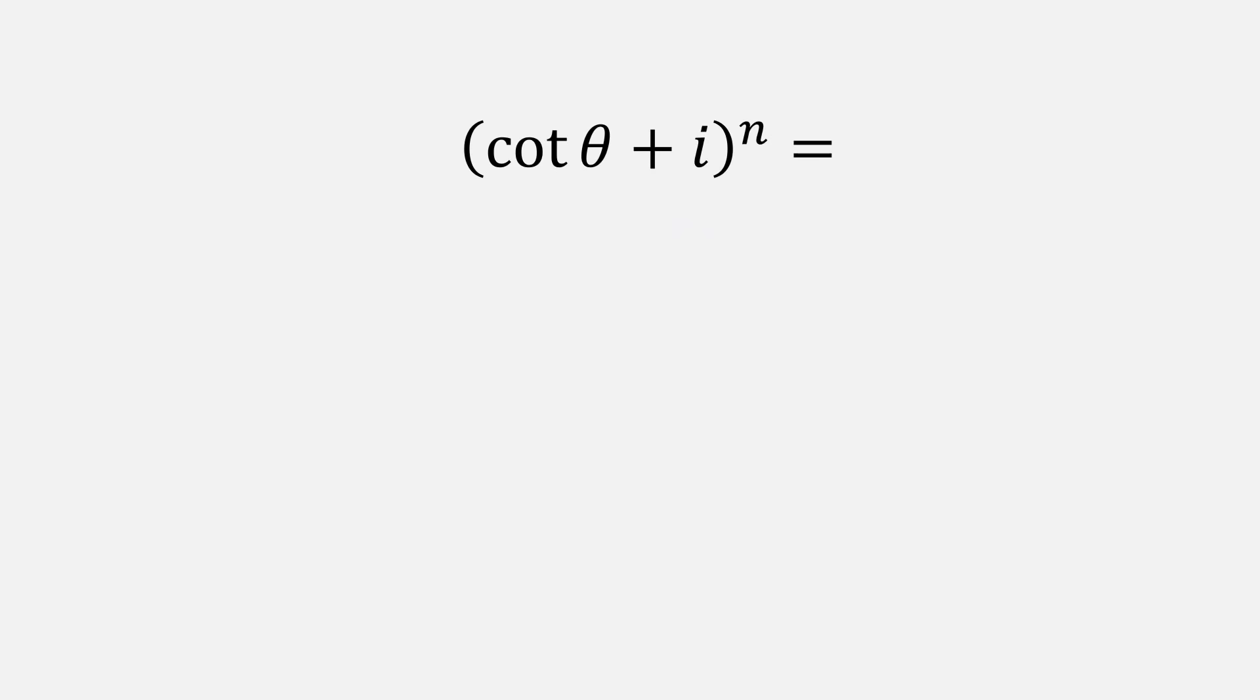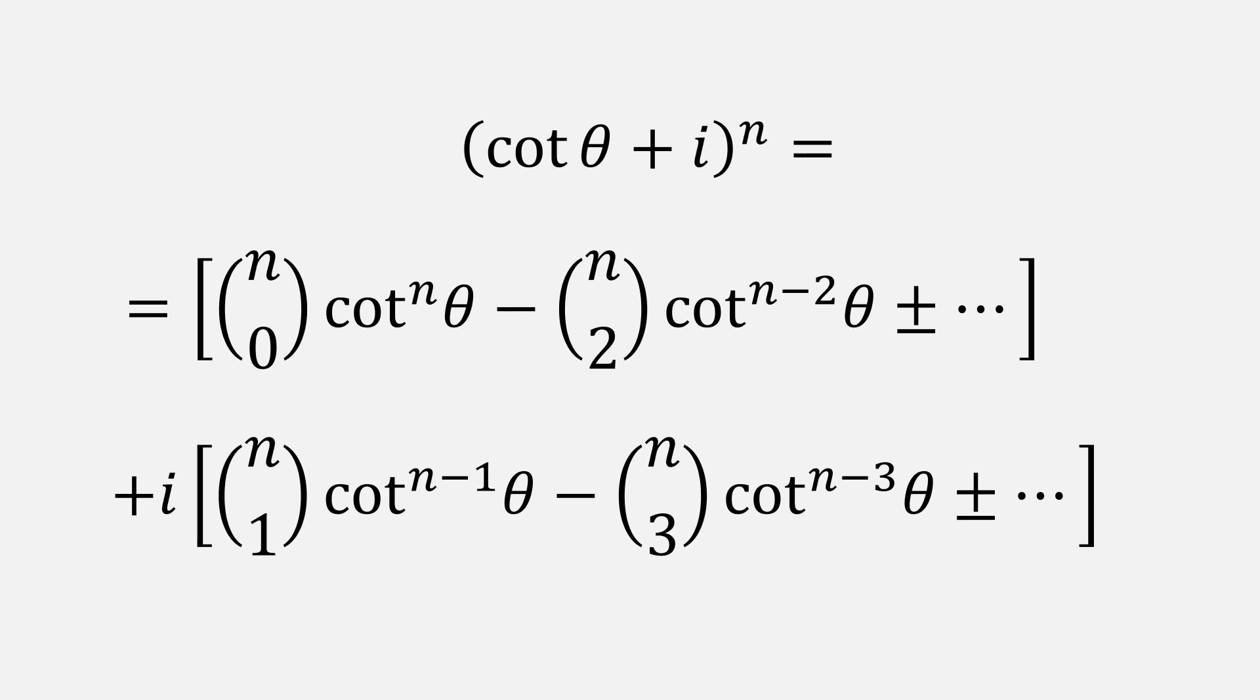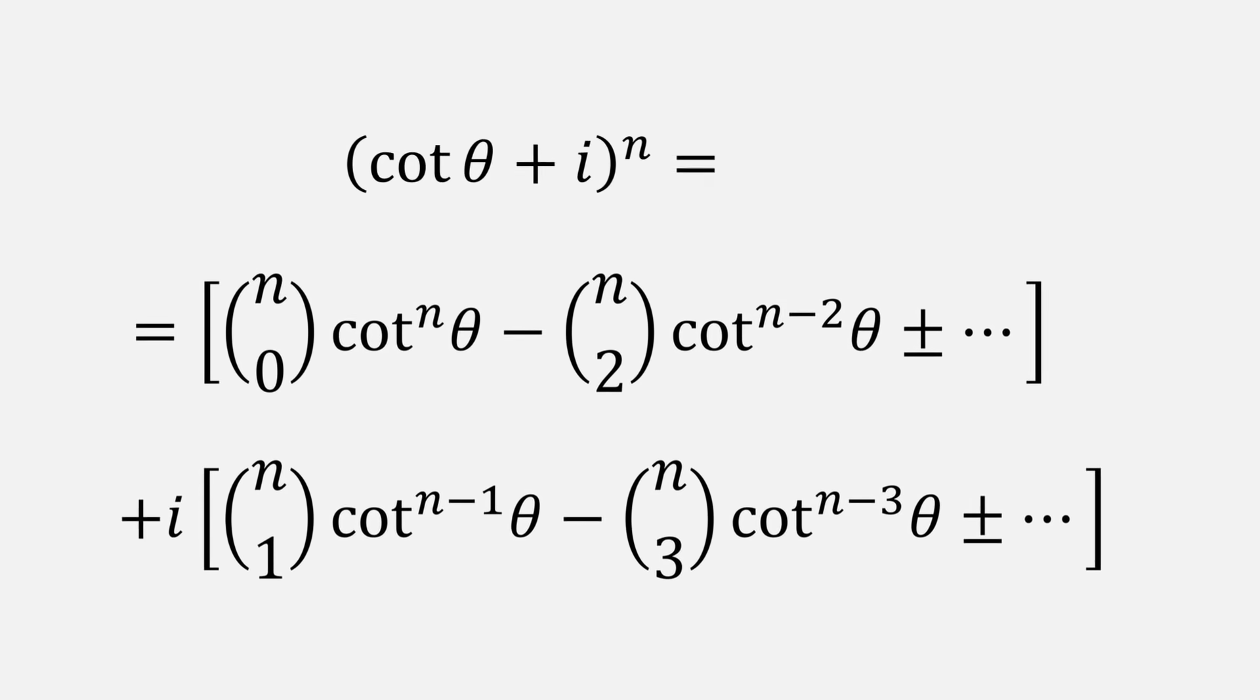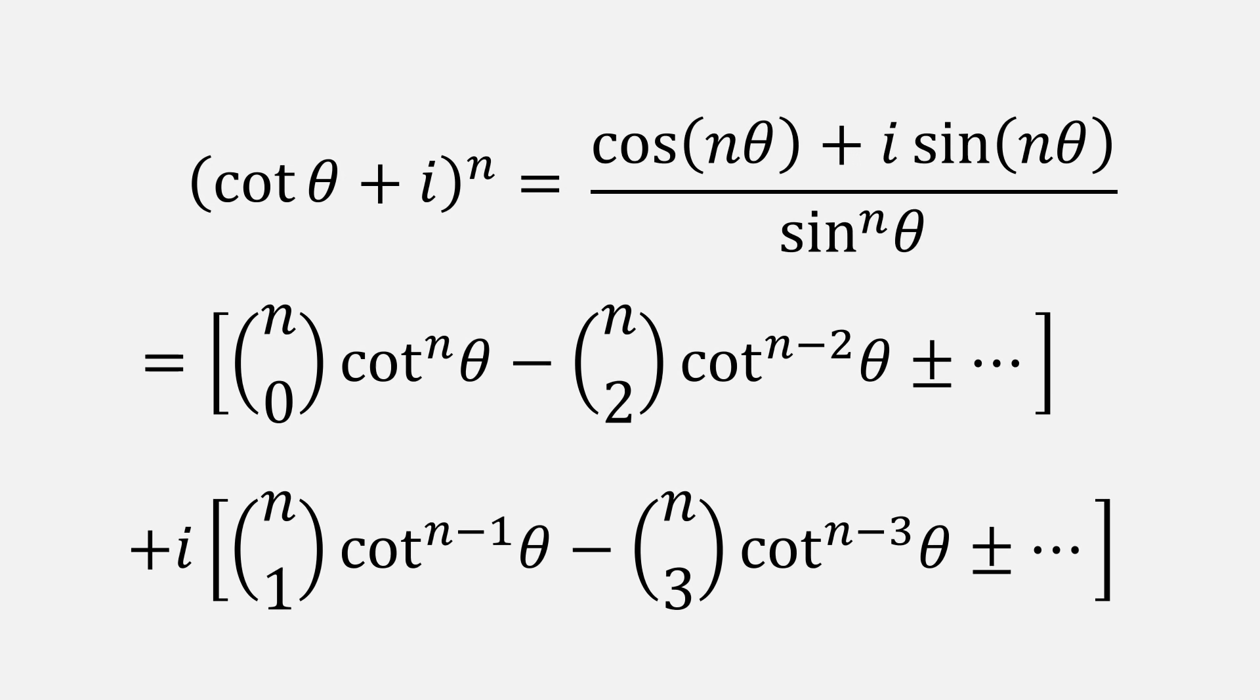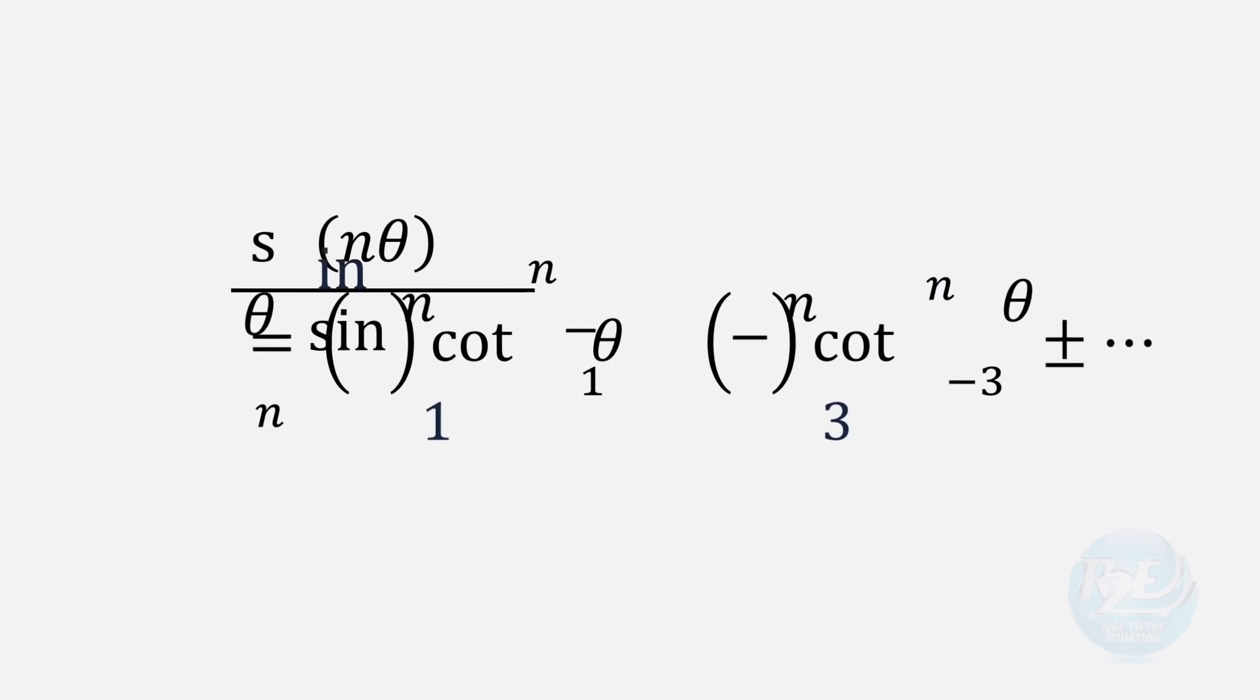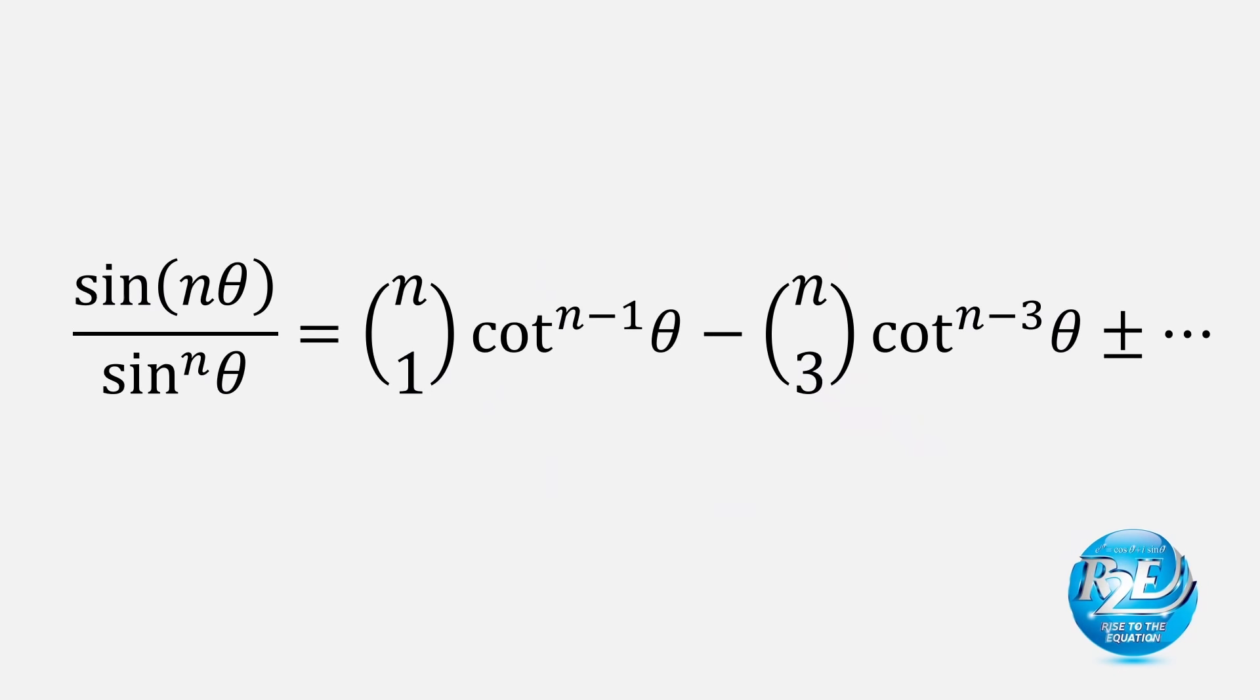Next, we rearrange by grouping together the real terms followed by the imaginary terms. And now comes a common trick when dealing with complex numbers. Cauchy is going to do the equating of the imaginary parts, which I've highlighted in blue.